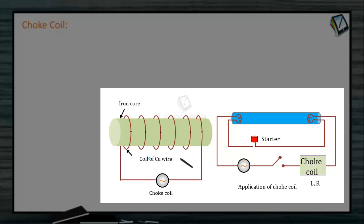Thus, the choke coil reduces the current without any appreciable loss of energy. The wastage of energy is only due to hysteresis loss in the soft iron core. Eddy current loss is reduced by laminating the soft iron core.